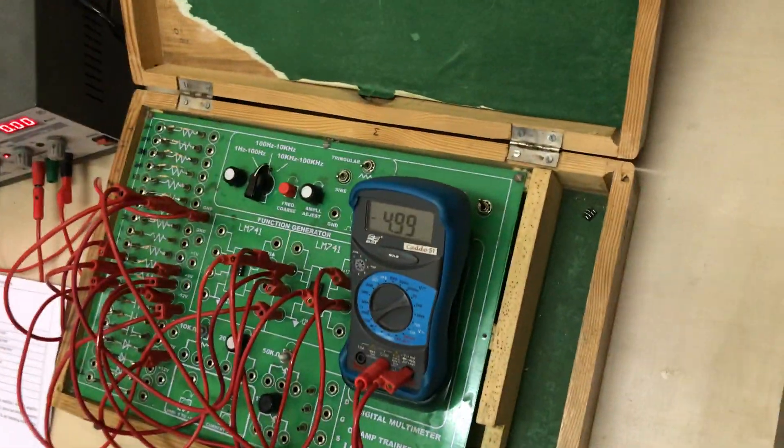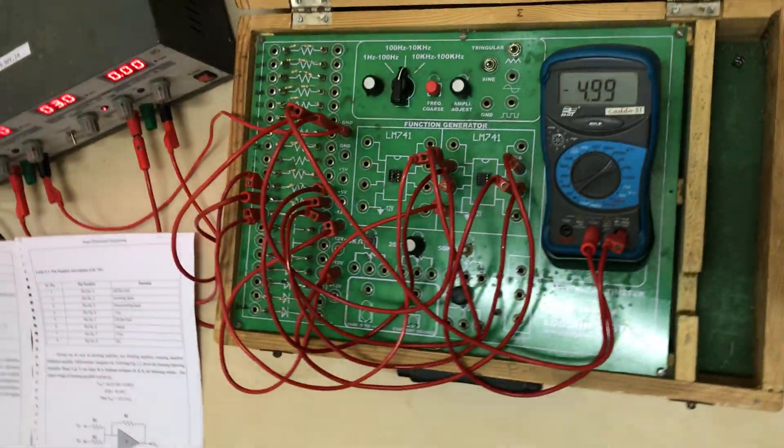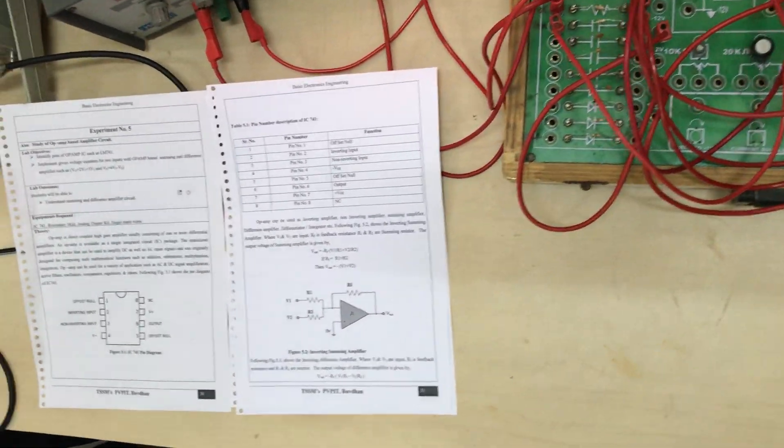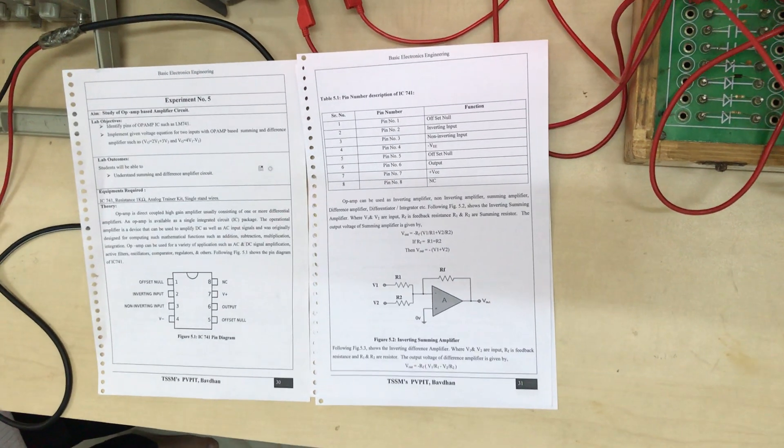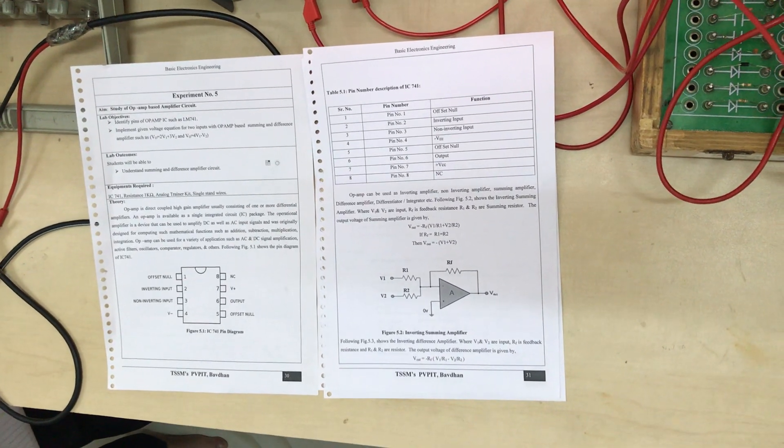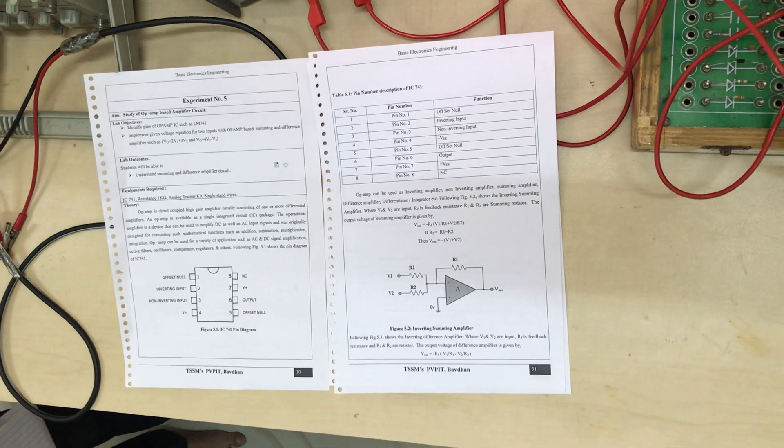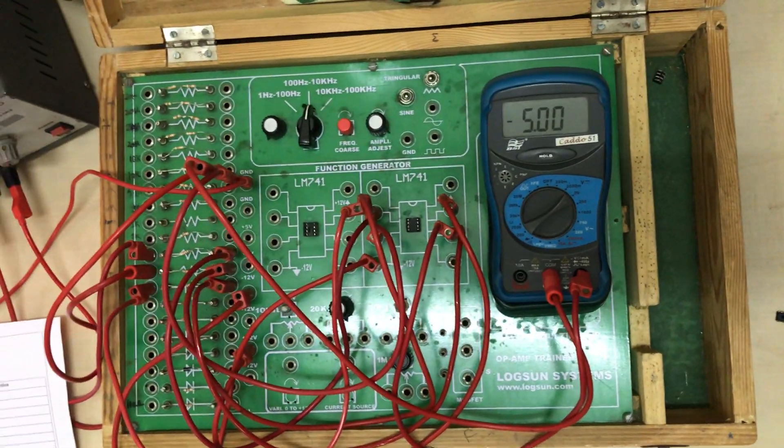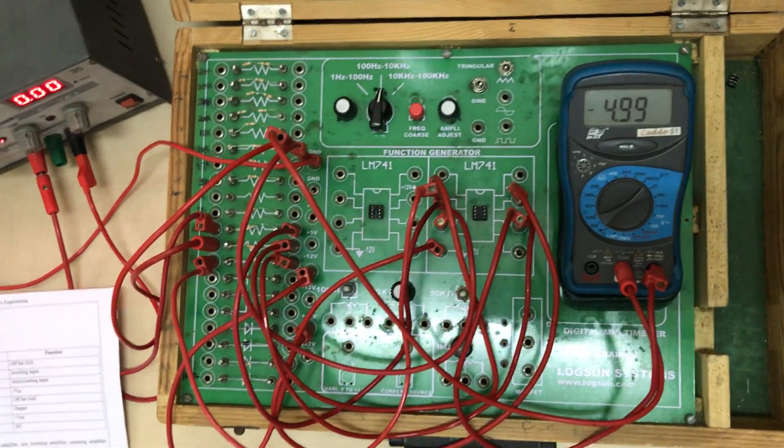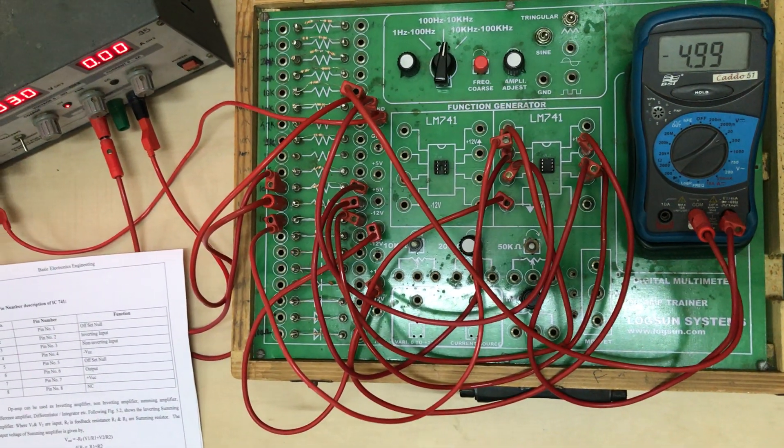Today's experiment is experiment number 5, the study of operational amplifier based on inverting or non-inverting terminal. We know two types of operational amplifier, one is inverting and another one is non-inverting, but now here we are studying only about inverting operational amplifier as a summer or adder.